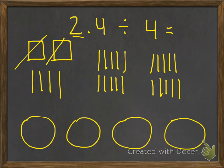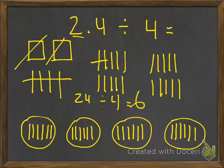Now we need to take these 24 tenths and share them equally into the four groups. We know that 24 divided by 4 equals 6, so there would be 6 tenths pieces in each group. I divided the 24 tenths equally into the four groups, resulting in 6 tenths in each group. Therefore, the answer to 2 and 4 tenths divided by 4 is 6 tenths.